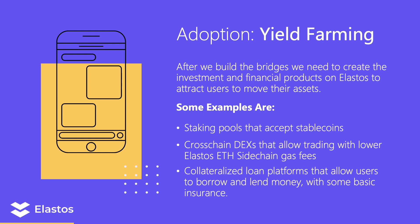Another thing we have to look at attracting is yield farming. Even if we build the bridges, they're not worth anything unless we have something on our side of the bridge to attract financial assets. We can build things like staking pools that allow you to earn a return on your stablecoins, cross-chain DEXs, or collateralized loan platforms. It would be very cool to create a way for people to earn reputation points through their Elastos DID and increase their Elastos credit score to borrow money at a set interest rate. The key is that as long as interest rates for lenders are higher than other blockchain projects, we'll be able to attract yield farming.